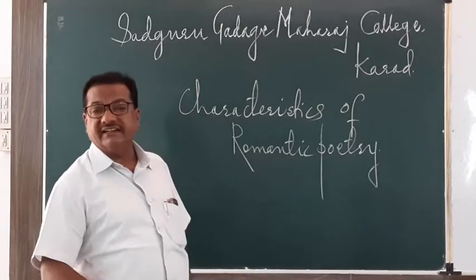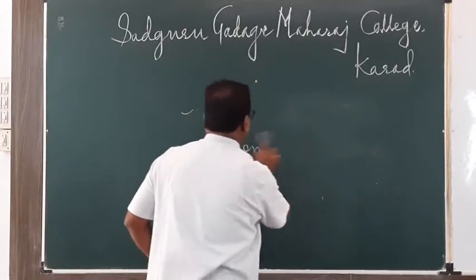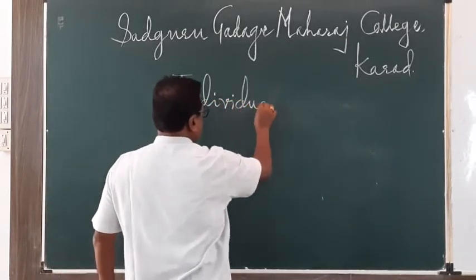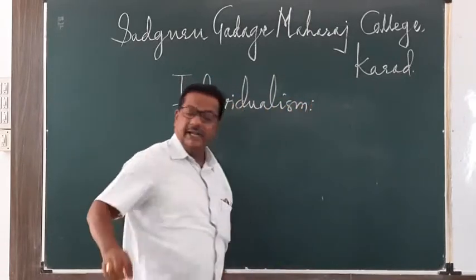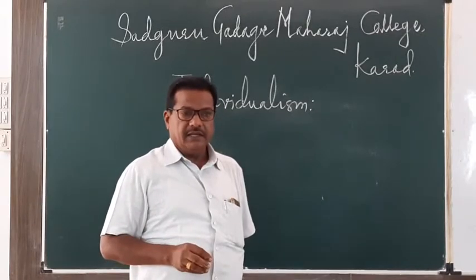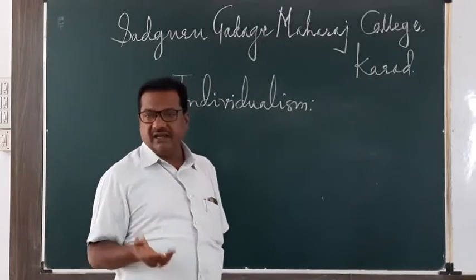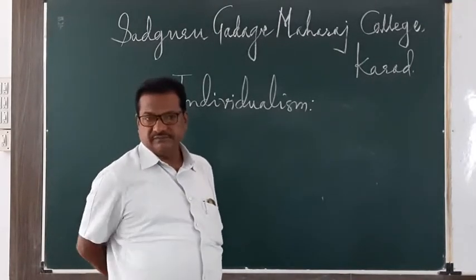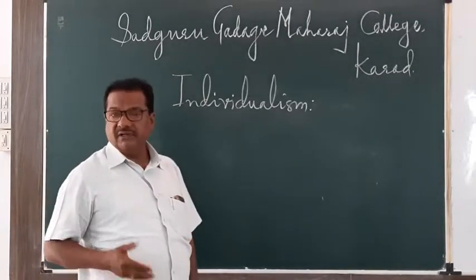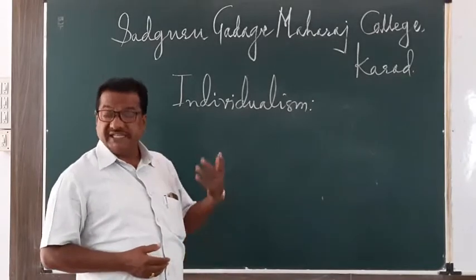The first important characteristic of romantic poetry is individualism. In the early part of the 19th century, romantic poets such as Wordsworth, Coleridge, Shelley, Byron, Keats, Southey, and Scott were all free to write anything freely. They had too much freedom regarding the subject matter, themes, and form of poetry.